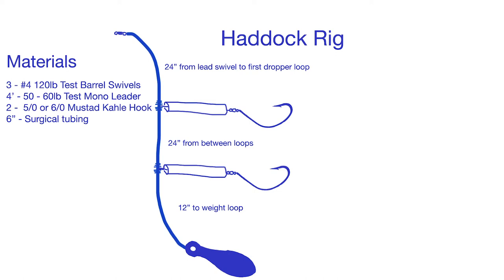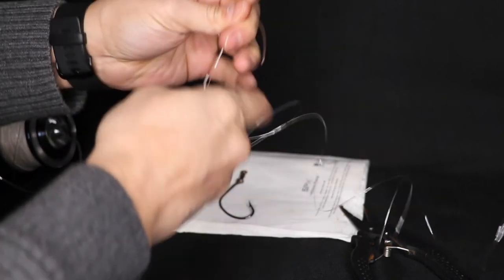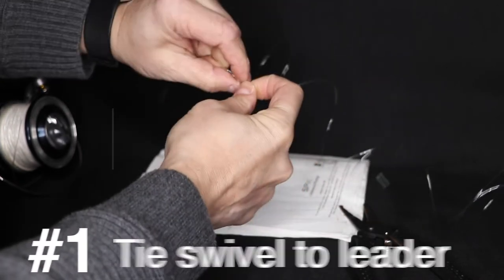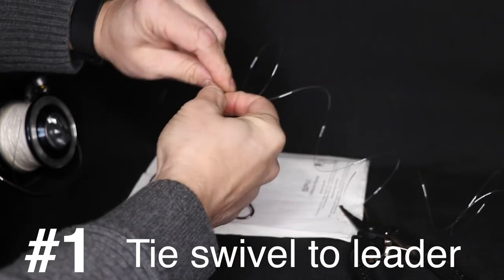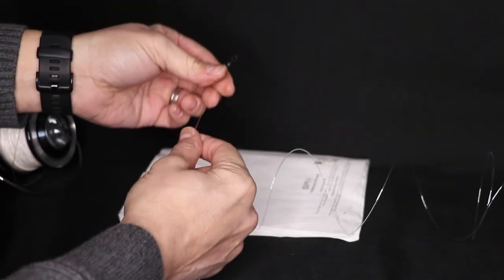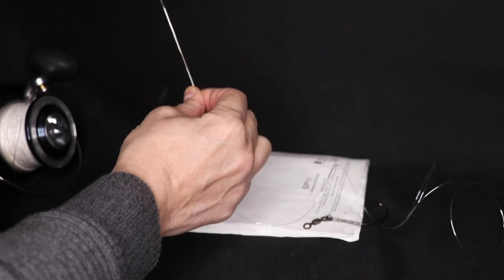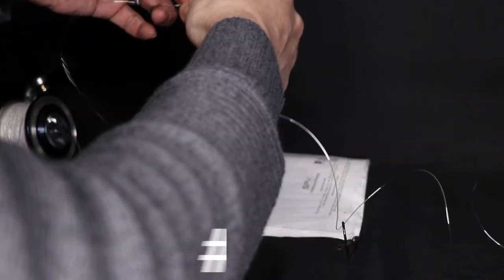Starting with the leader material, we start with the top of the eye. Quick clinch knot. I'm going to go down two feet to do my first dropper loop.